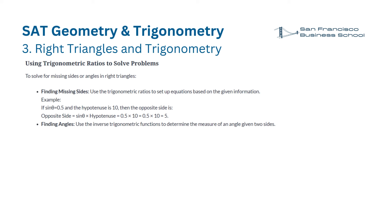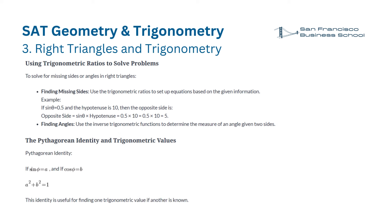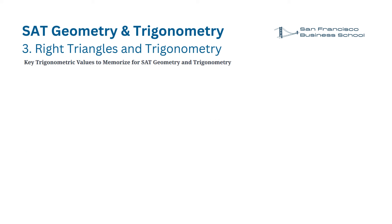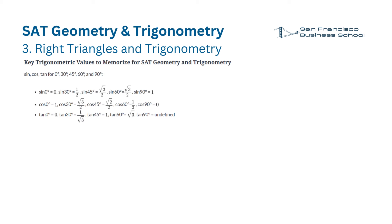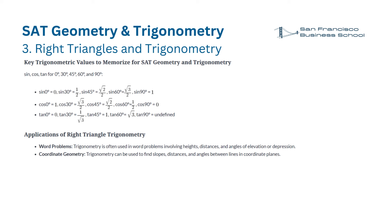Finding angles: use inverse trigonometric functions to determine the measure of an angle given two sides. Pythagorean identity: sine squared θ plus cosine squared θ equals 1. This identity is useful for finding one trigonometric value if another is known. It is crucial to know the sine, cosine, and tangent for angles 0, 30, 45, 60, and 90 degrees. Applications include word problems involving heights, distances, and angles of elevation or depression, as well as coordinate geometry.